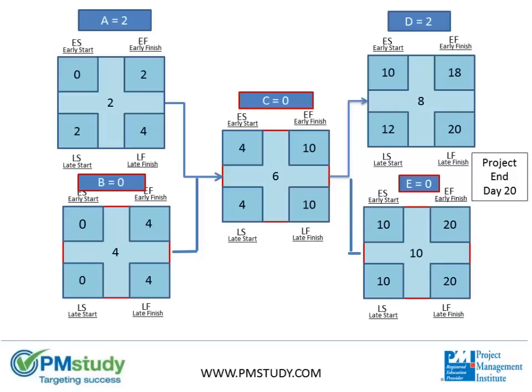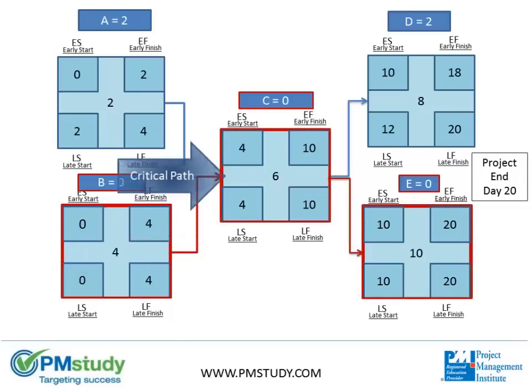So out of the four paths in this diagram, there is one critical path, which is task B to task C to task E.